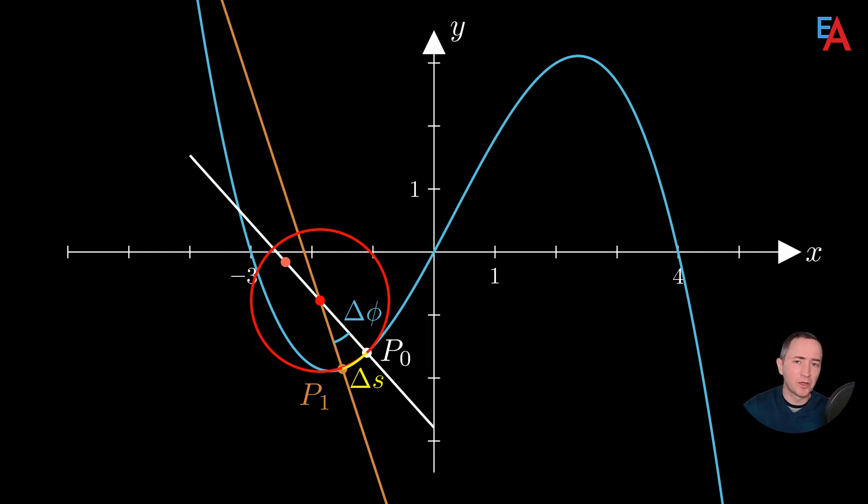We can calculate the radius of the red circle by dividing the arc length by the angle in radians. And now we follow what happens in the limit when the value of this angle approaches zero.